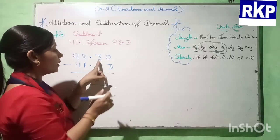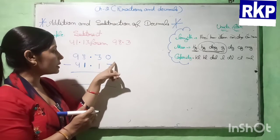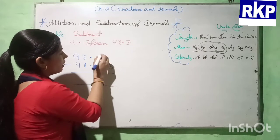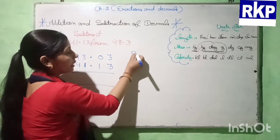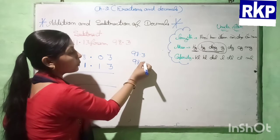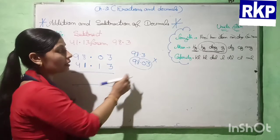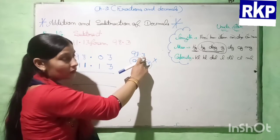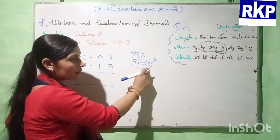We need to put one zero to make these like decimals. Now the number of digits after the decimal point is the same. We must not change the place of the given digit — here 3 is written at tenths place, so we keep 3 at tenths place and put 0 at hundredths place.